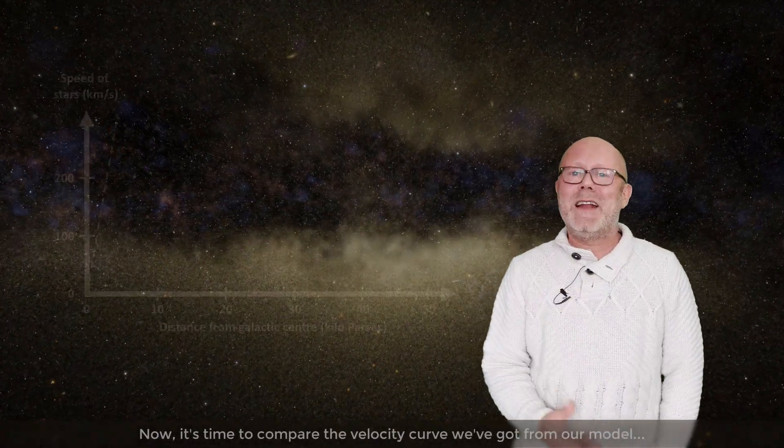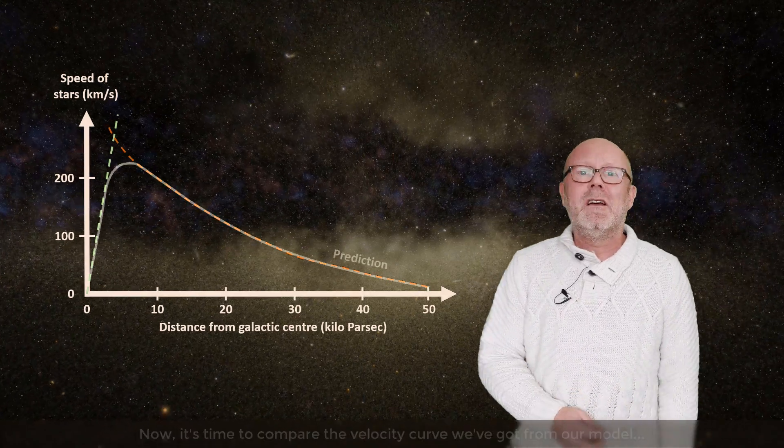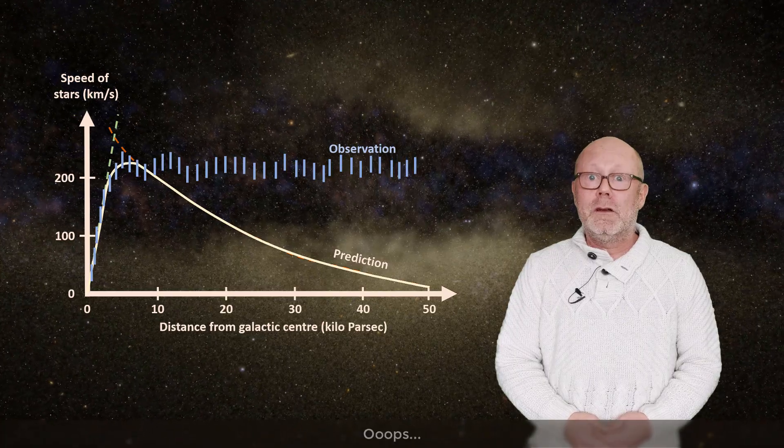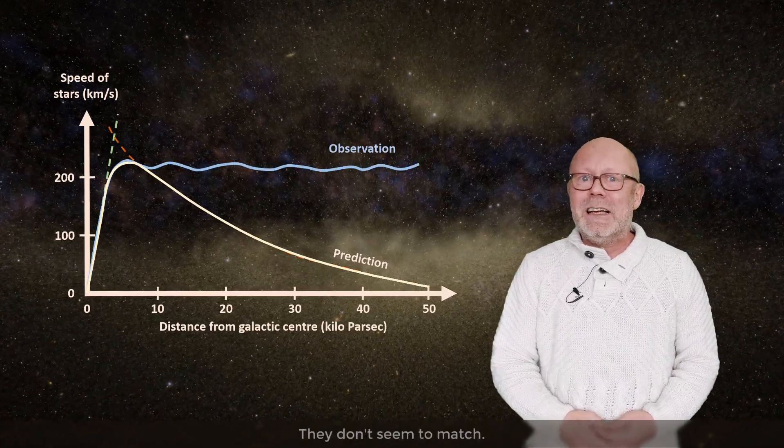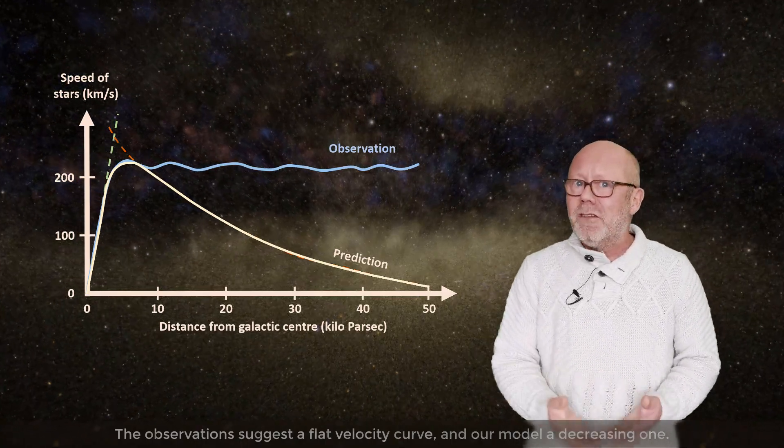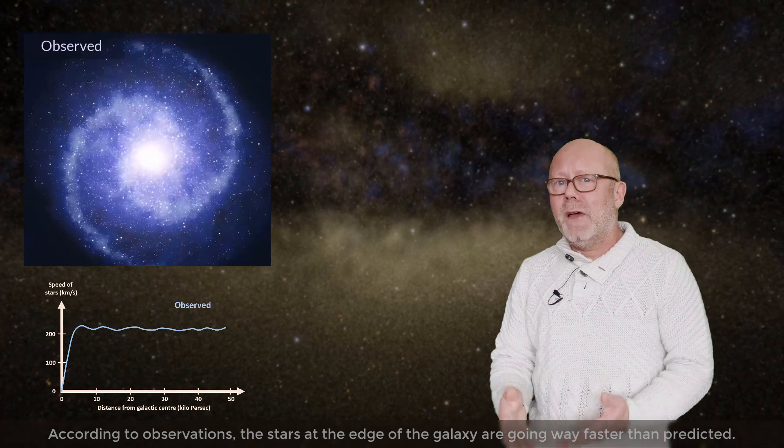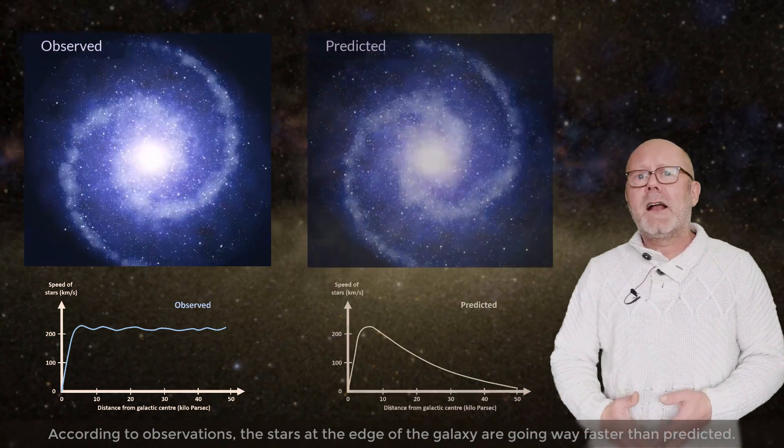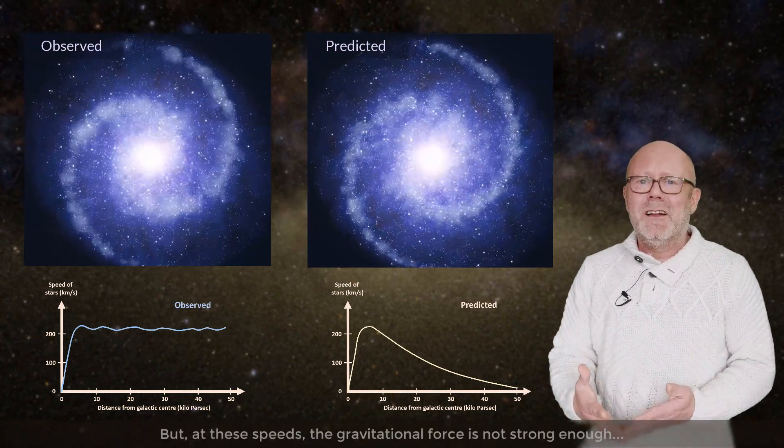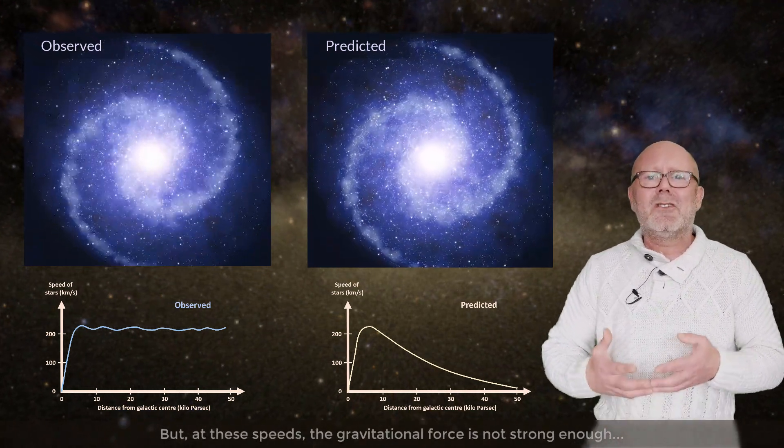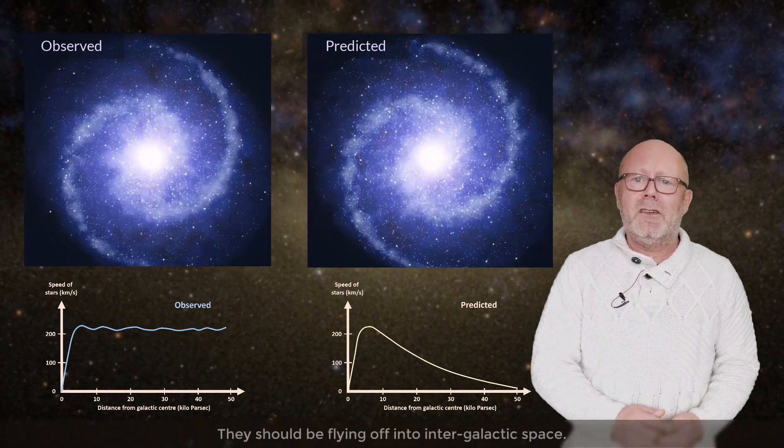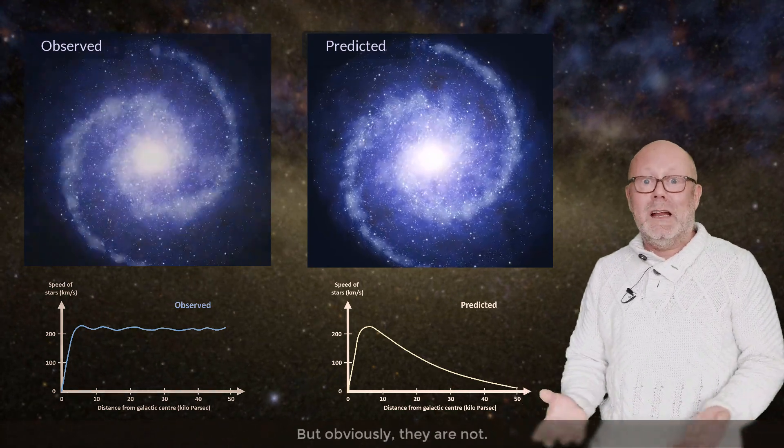Now it's time to compare the velocity curve we got from our model to the one obtained from observations. Oops, they don't seem to match. The observations suggest a flat velocity curve and our model a decreasing one. According to the observations, the stars at the edge of the galaxy are going way faster than predicted. But at these speeds, the gravitational force is not strong enough to hold the stars. They should be flying off into intergalactic space. But obviously they are not.